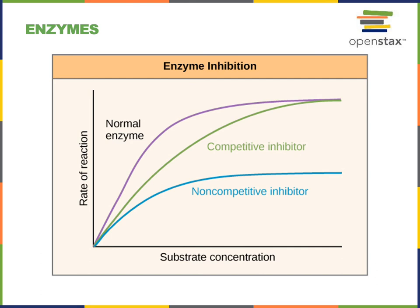A competitive inhibitor is a molecule that binds to the active site of the enzyme. Therefore, as we increase the substrate concentration, substrate will compete with the competitive inhibitor for the active site. At very high substrate concentration, the substrate will out-compete the inhibitor, leading to the same Vmax as the solution with the normal enzyme containing no inhibitor.